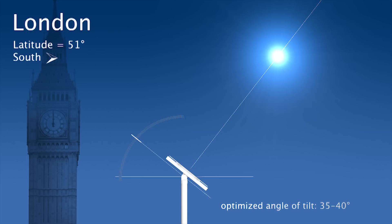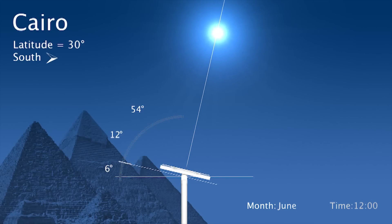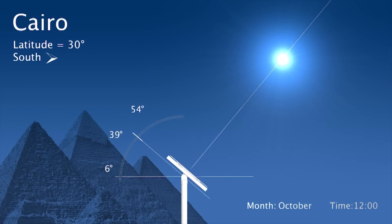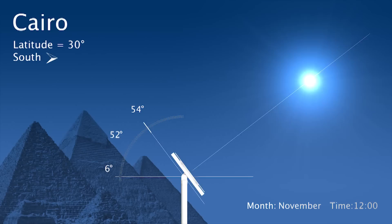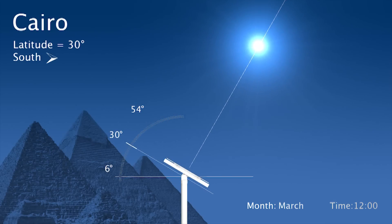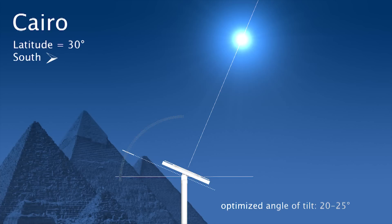Moving closer to the equator, we have Cairo at around 30 degrees latitude. We notice that the range of tilt angles has diminished to around 6 to 54 degrees. The optimized angle of tilt in such a case would be around 20 up to 25 degrees facing south.